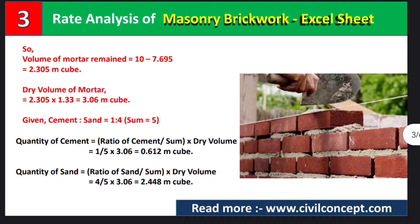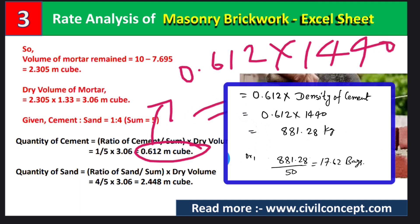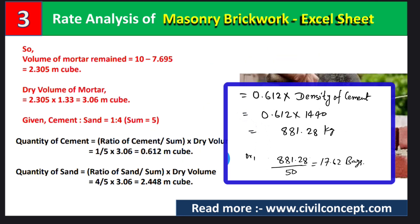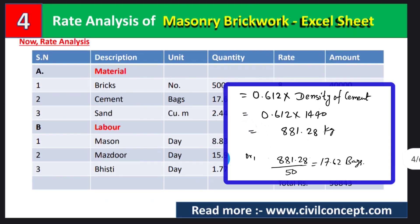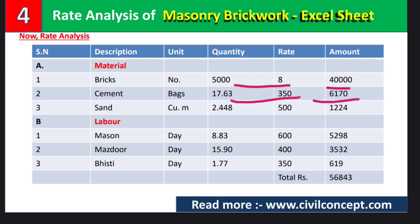To calculate cement bags: multiply the volume of cement (0.612 m³) by 1440 to get the total kg, then divide by 50 to convert to bags — giving 17.63 bags. The rate is 350 per bag. For sand, the quantity is 2.448 cubic meters at rate 500 per cubic meter. Multiplying: bricks = 40,000, cement = 6,170, sand = 1,224.